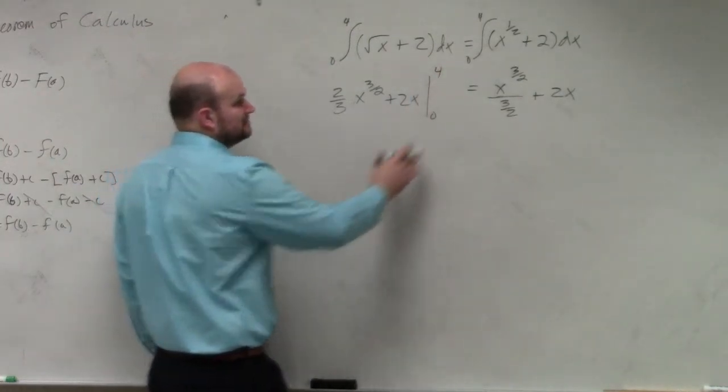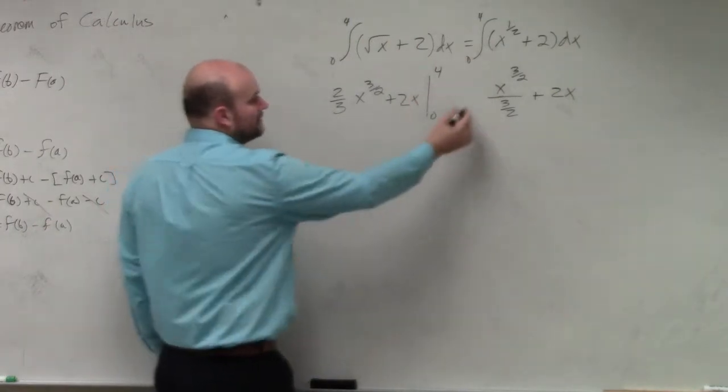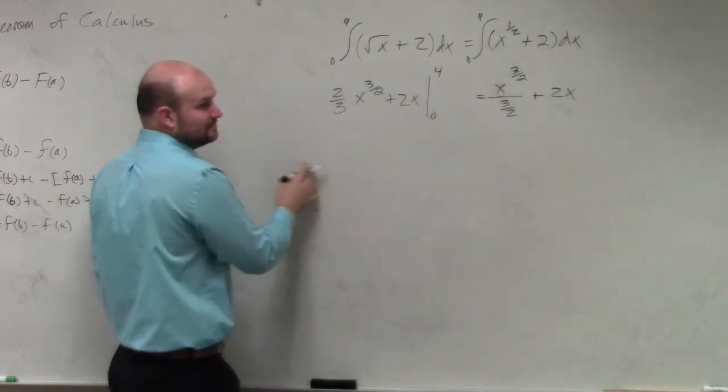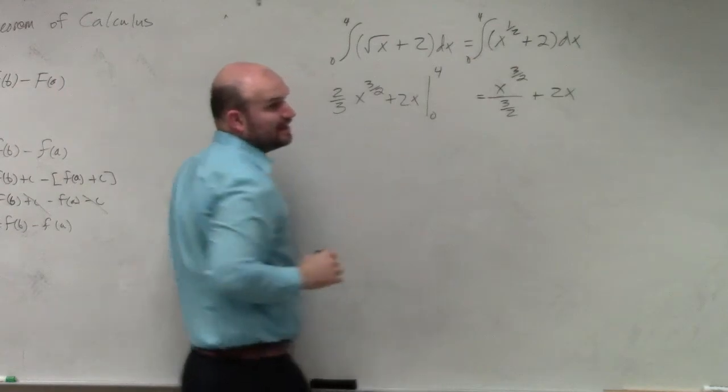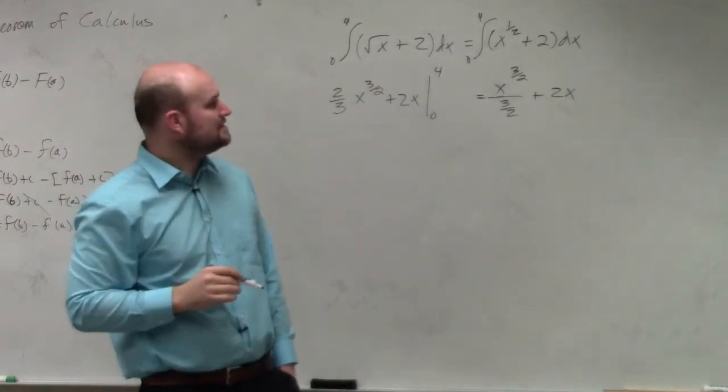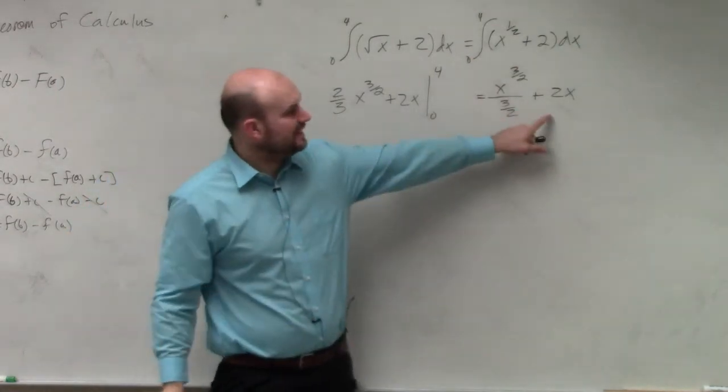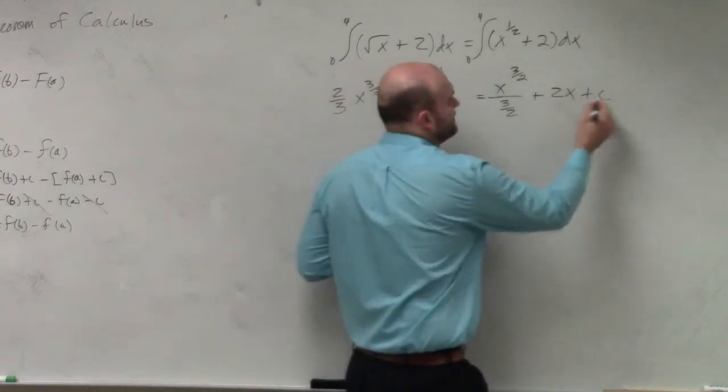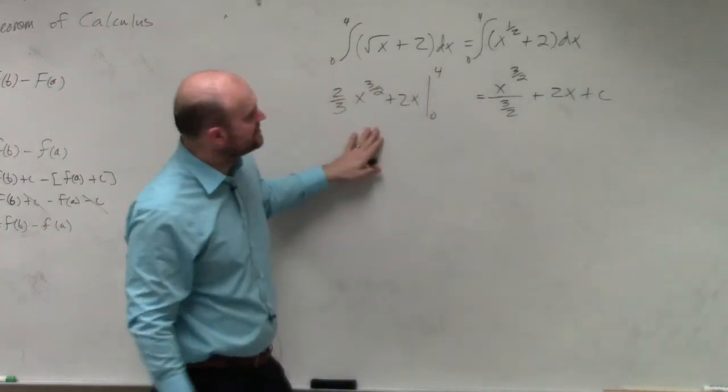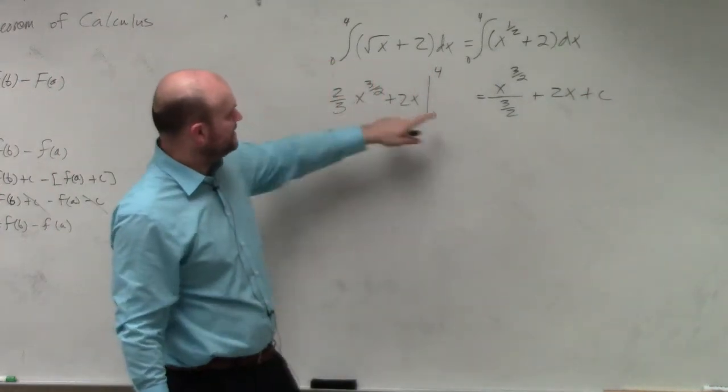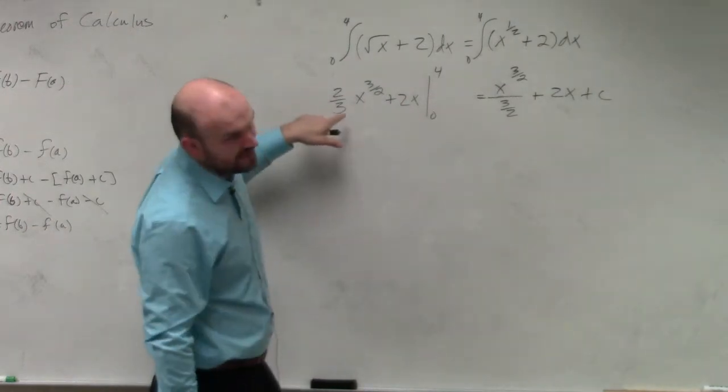Does everybody follow my integrating here? So I rewrote it using a fractional exponent, Carlson. And then basically, I just took the integral, or the indefinite integral here. But I'm evaluating, so I don't need to include the c. And dividing by 3 halves is the same thing as multiplying by 2 thirds.